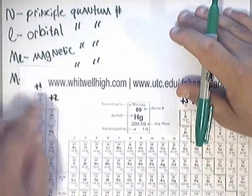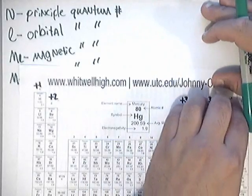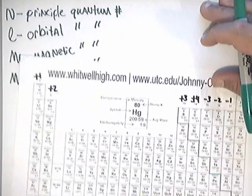So, just remember that an L value tells you the type of orbitals. If it's a 0, it's an S. If it's a 1, it's a P. If it's a 2, it's a D. If it's a 3, it's an F.